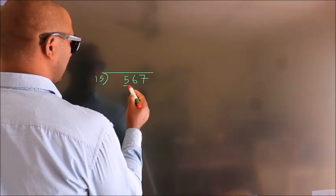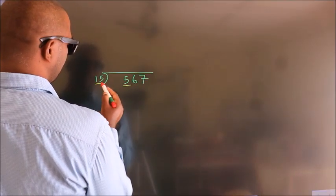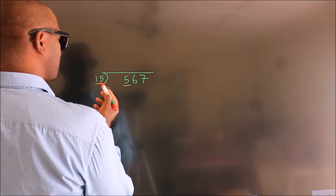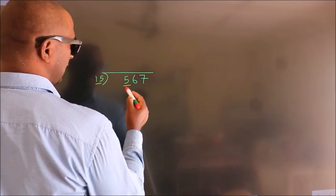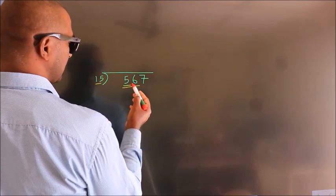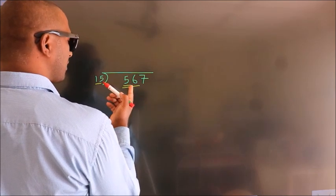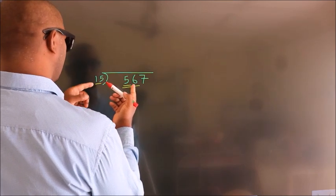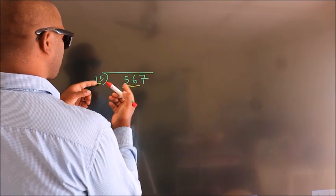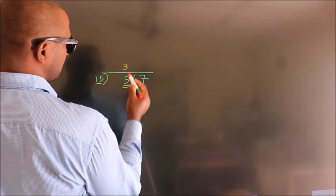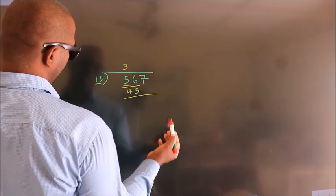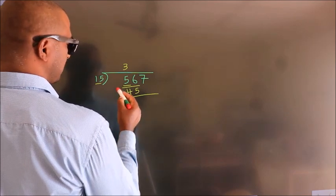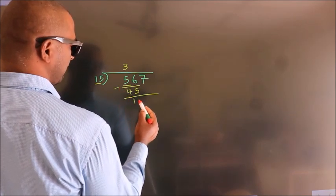Here we have 5. Here 15. 5 is smaller than 15, so we should take two numbers: 56. A number close to 56 in the 15 table is 15 threes, 45. Now we subtract and we get 11.